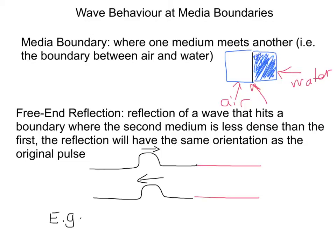Free-end reflection is reflection that occurs when a wave hits a boundary where the second medium is less dense than the first. The reflection will have the same orientation as the original pulse.